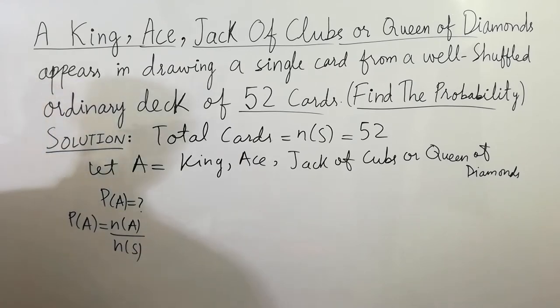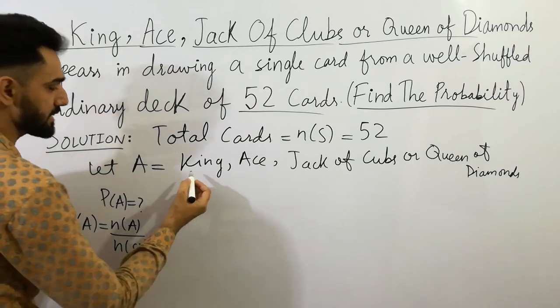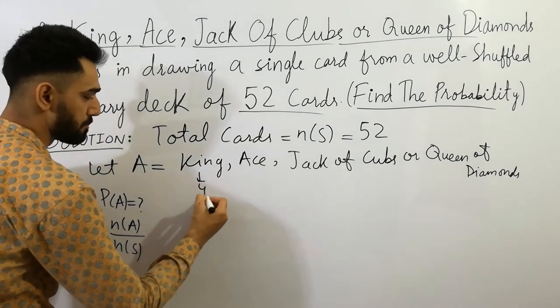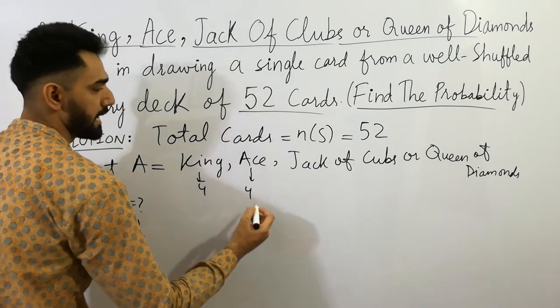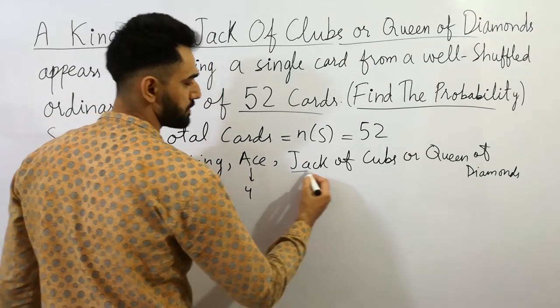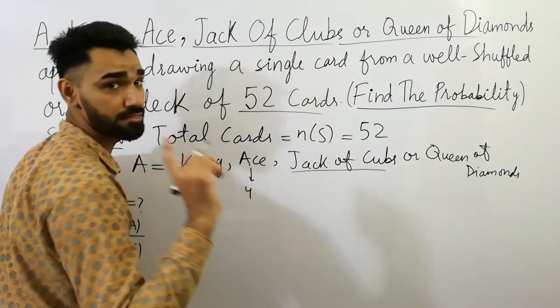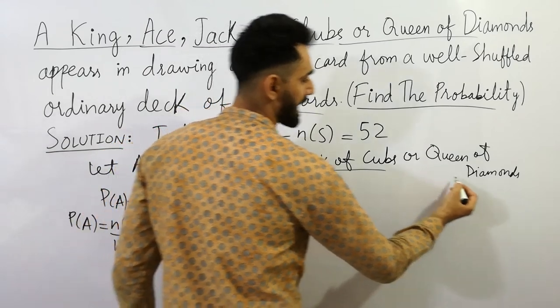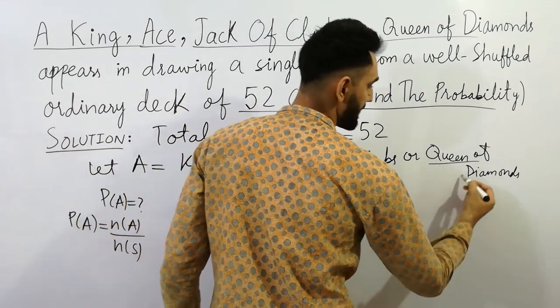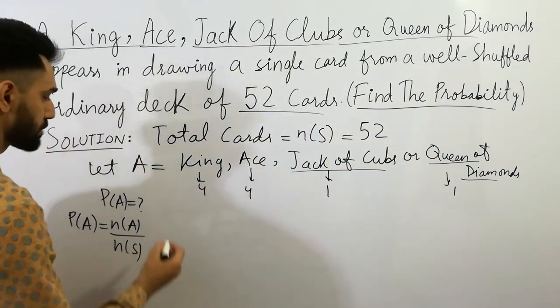You can easily calculate the probability. So here A is given here: king. What are kings? King is always four, must remember that. And ace is always four. Next, jack of clubs is one.